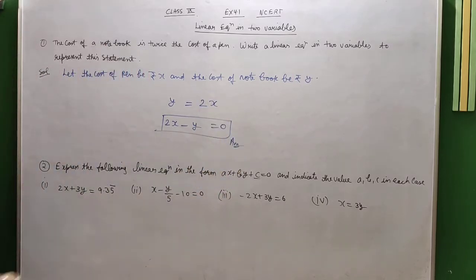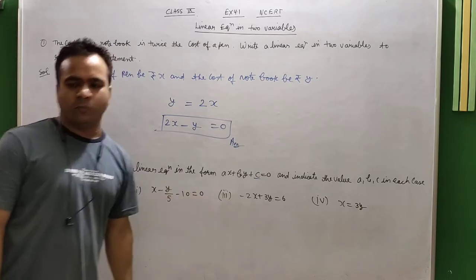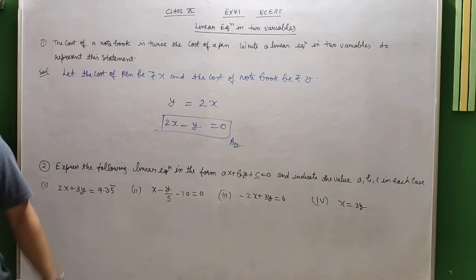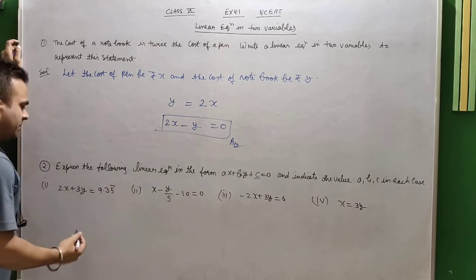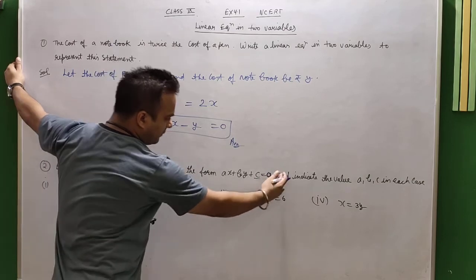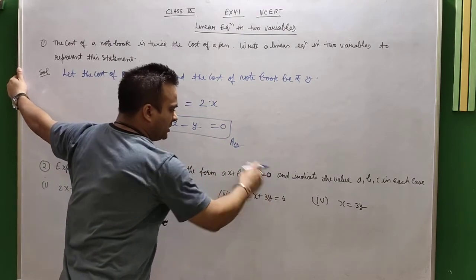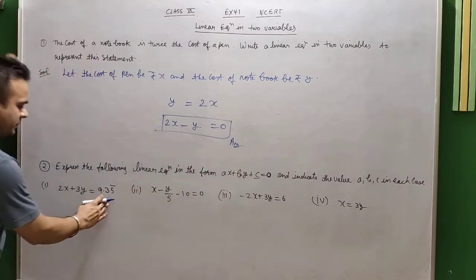Okay, now next question: express the following linear equations in the form of ax plus by plus c is equal to zero. When you have equations, you have to say that everything is on the left hand side and it is just zero.